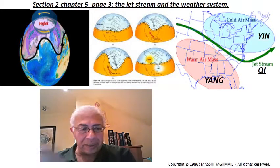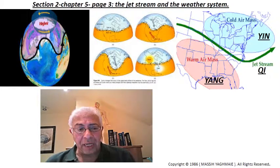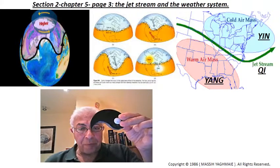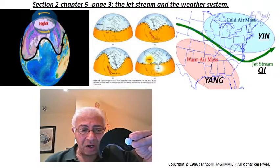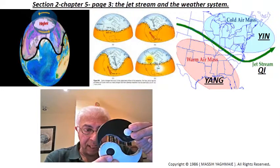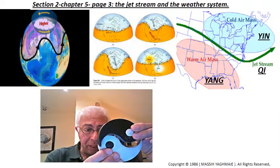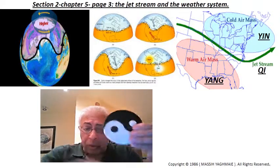And that's based on yin and yang. So you've got the cold air, which is the yin, coming from the north, and the hot air, which is the yang, coming from the equator and the south. When the two meet together, it creates this jet stream, so wind like a wind tunnel going around the planet.